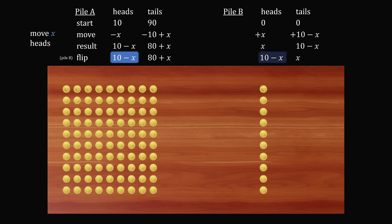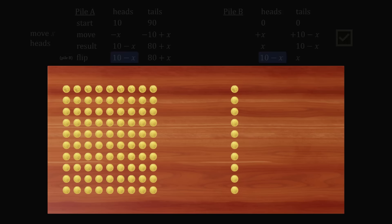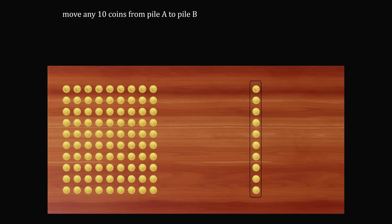Therefore, this is a solution and this procedure will always work. So to summarize once and for all, move any 10 coins from pile A to pile B. Then flip every single coin that's in pile B. The resulting two piles will always have the same number of heads. And that's the answer!